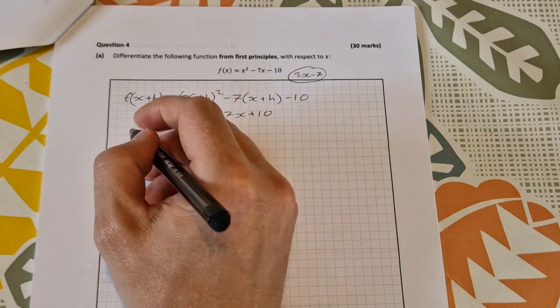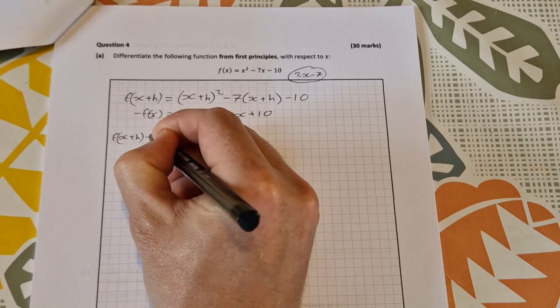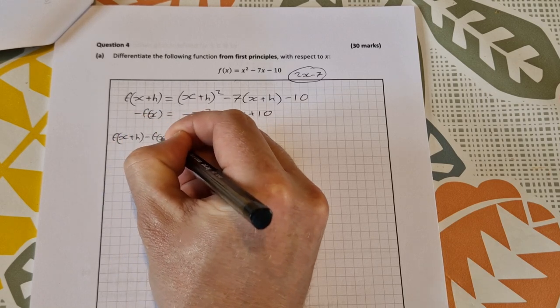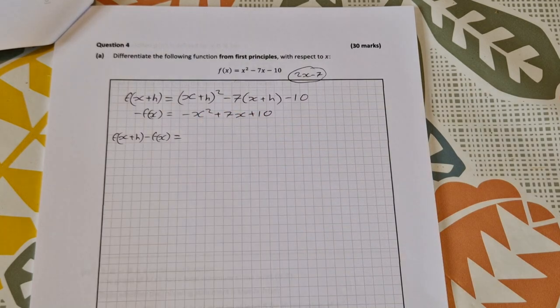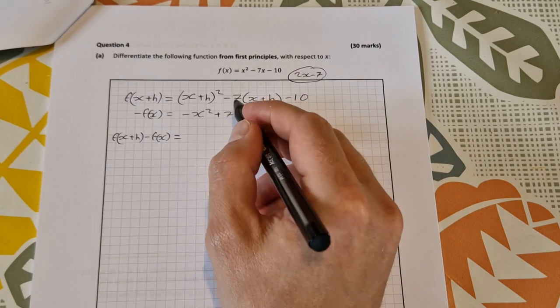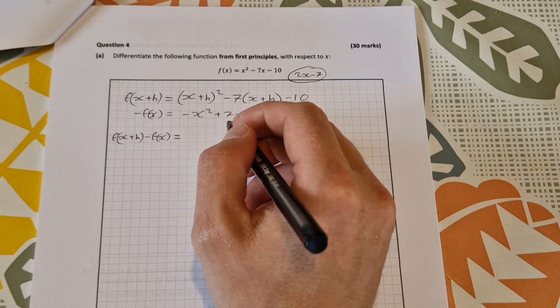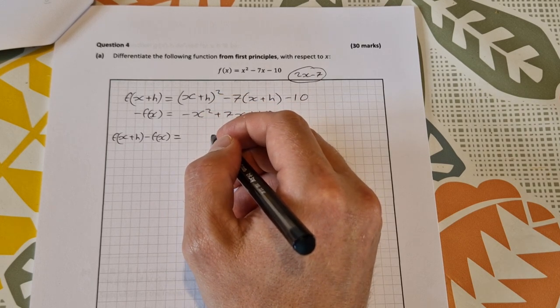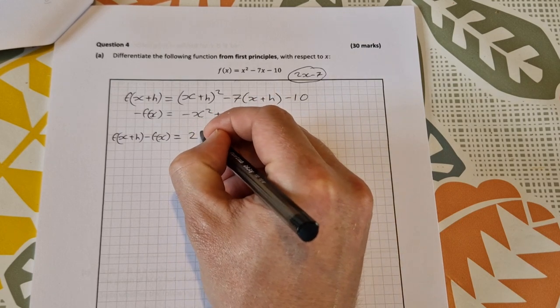We'll put these together to do f(x+h) - f(x). Some people do this all in one step, but I just like to split it up. So f(x+h) - f(x) works out to be 2hx + h² - 7h.